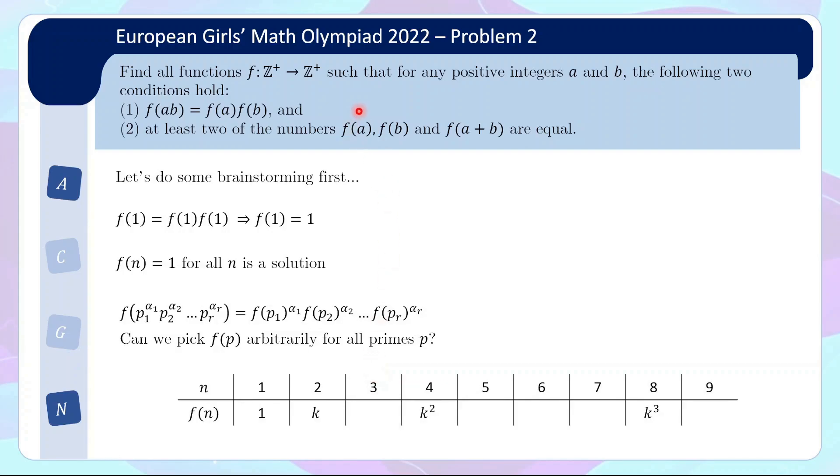Well, look at property 2. So we have 1 plus 2 equals 3. So this trio, there must be 2 equal. So this must be 1 or k. But then 1 plus 3 equals 4. So the trio 1, 3, and 4, again there must be 2 that are equal. So this is 1 or k squared. So 1 or k versus 1 or k squared. The only possibility is this is 1.